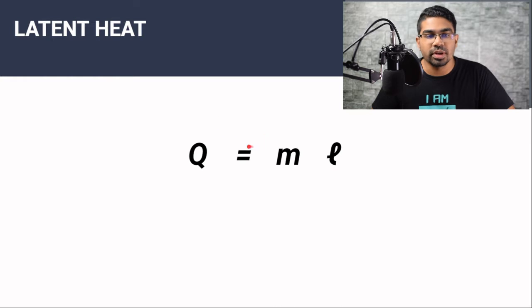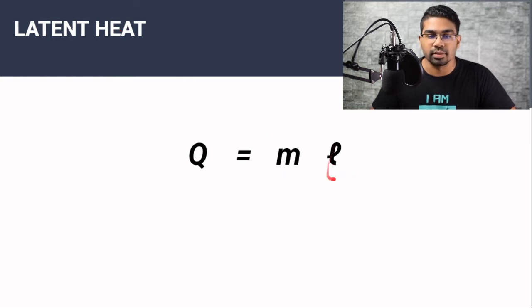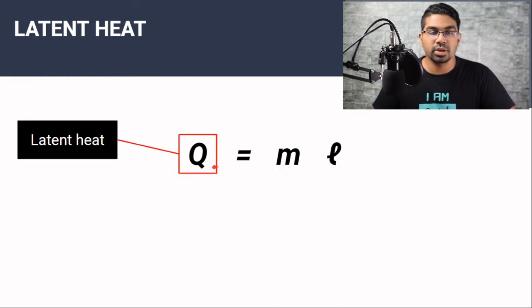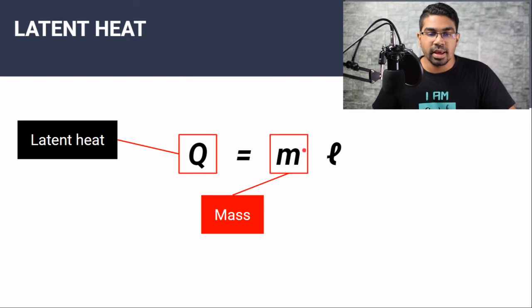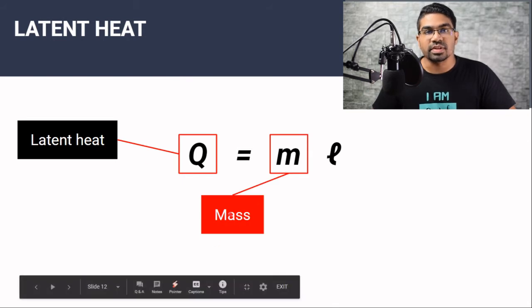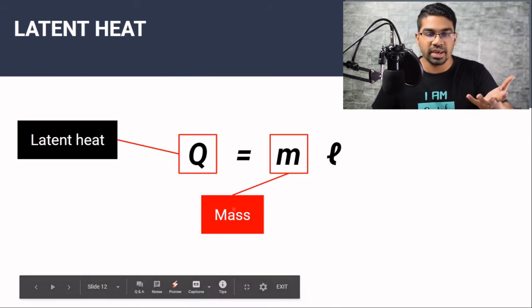It is very important to note that latent heat is strictly the energy involved in changing the phase of matter. It has nothing to do with the increase or decrease of the average kinetic energy of the substance that is reflected in temperature — so there should be no change in temperature. Latent heat is used for it to change phase, not to increase or decrease in temperature. The formula for latent heat is Q equals ML, where Q is the latent heat, M is the mass of the substance changing phase, and L is the specific latent heat.